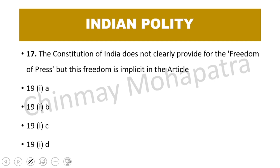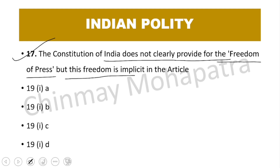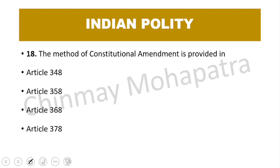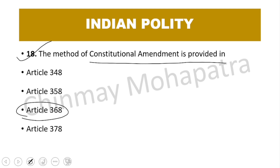Question number 17: The constitution of India does not clearly provide freedom of the press, but this freedom is implicit in which article? The right answer is Article 19(1)(a). Question 18: The method of constitutional amendment is provided in which article? The right answer is Article 368.